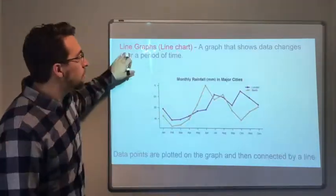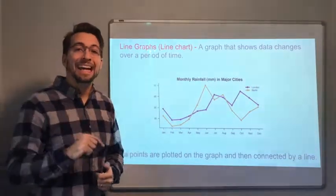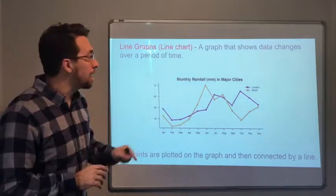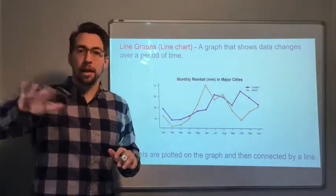What is a line graph? A line graph, or a line chart, is a graph that shows data that changes over time. So this is the biggest part of the definition. It shows changes over time.